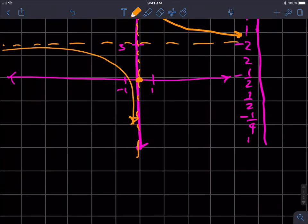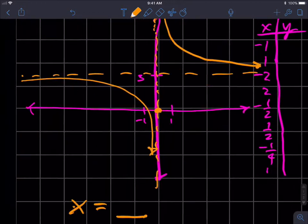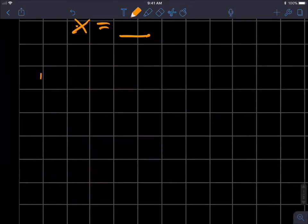So our vertical asymptotes are always going to be x equals some value, some real number. And there isn't just only one—we could have more than one. As another example, we could have this function.